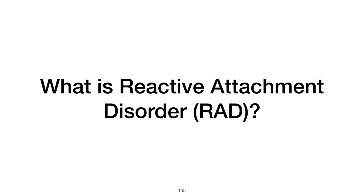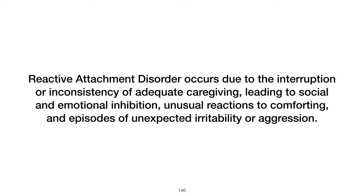What is reactive attachment disorder (RAD)? Reactive attachment disorder occurs due to interruptions or inconsistencies in adequate caregiving during critical periods of development. Children with RAD often show social and emotional inhibition, do not respond typically to comforting, and may exhibit extreme aggression or violence in situations that do not seem threatening, including sudden irritability or aggressive episodes in safe encounters.